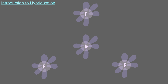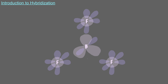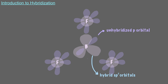Let's watch this happen in real time. Notice that when the fluorine atoms are far away from the boron atom, the boron atom's valence orbitals are 2s and the three 2p orbitals. But as the fluorines get close to the boron, these three valence atomic orbitals mix together to form new hybrid sp2 orbitals, and there's one unhybridized p orbital remaining.